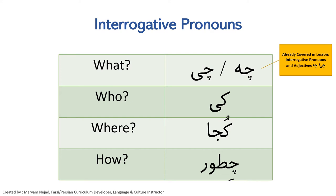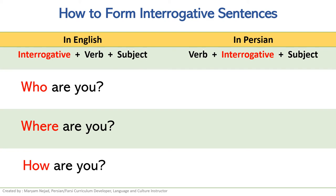The first interrogative, 'what' — which is 'che' or 'chi' — has already been covered in the lesson about interrogative pronouns and adjectives. But in this lesson we are going to learn three more interrogatives: we are going to go over 'key', 'koja', and 'chatur'.